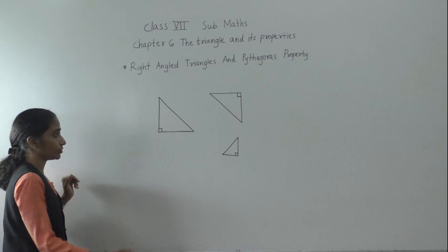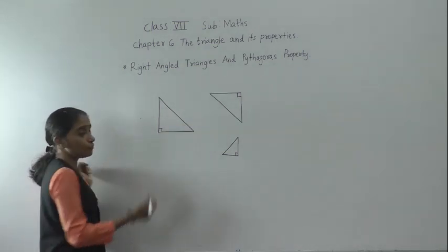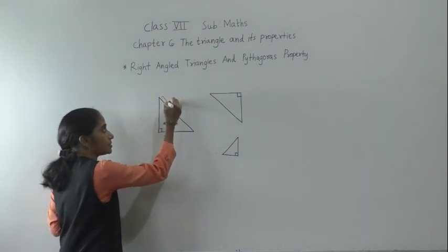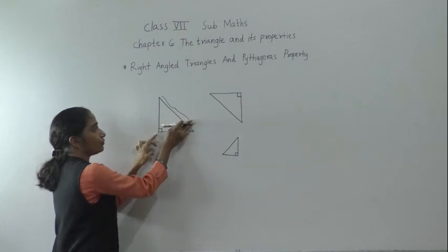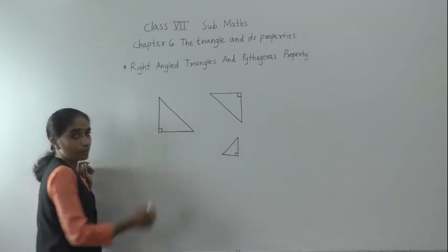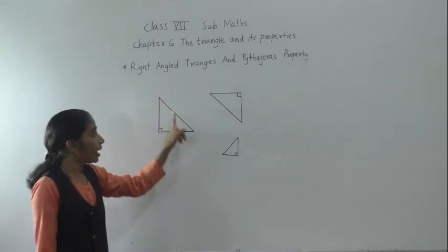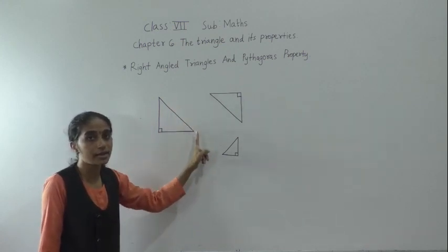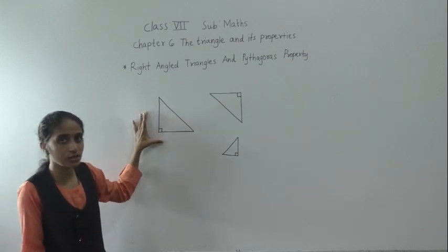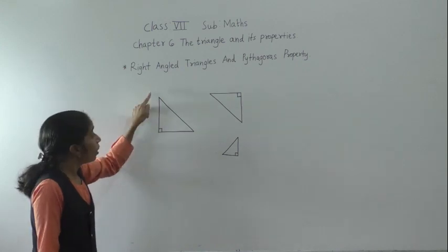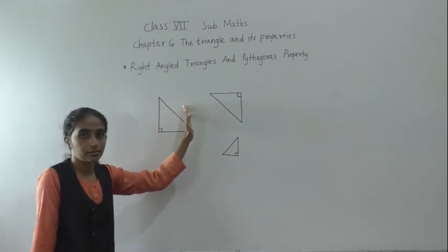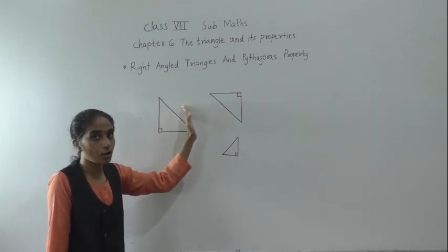In this triangle, the opposite side of the right angle — the opposite side of the 90 degree angle — is called the hypotenuse. What do we call this side? Hypotenuse. And for the other two sides, we can say the legs or sides of the triangle. The opposite side of the 90 degree angle is called the hypotenuse of that triangle.